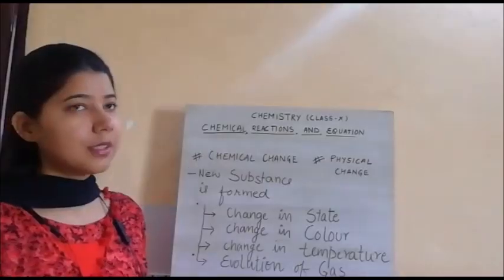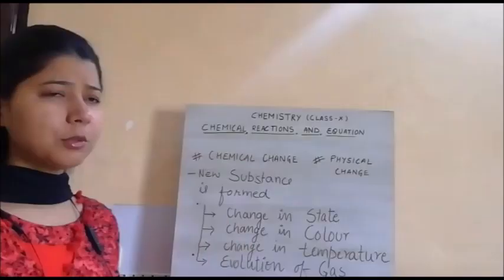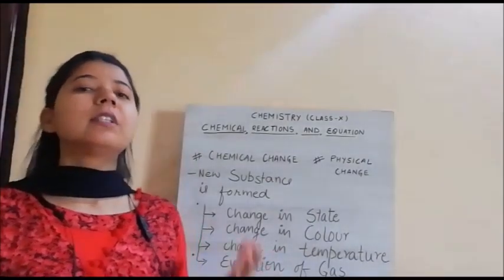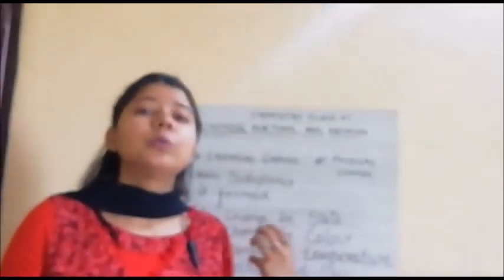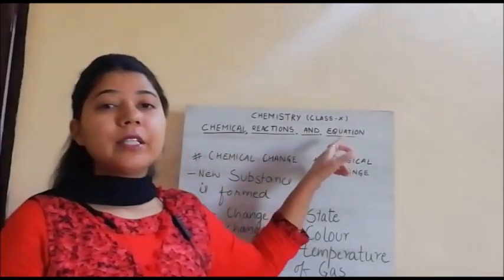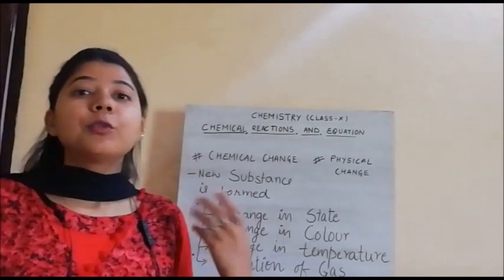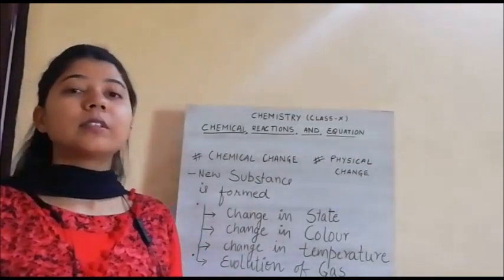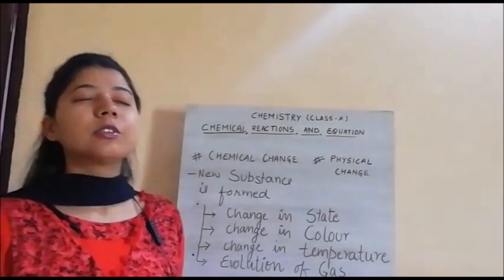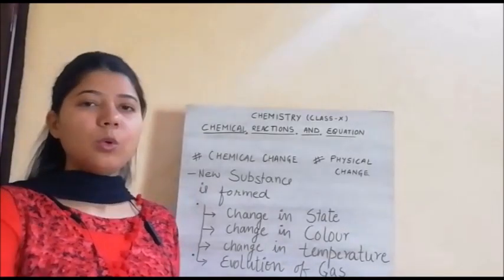Hello everyone. Today we are going to start the very first chapter: Chemical Reactions and Equations. In this chapter, first of all, let's check the objectives - what we are going to learn. You are going to know everything about chemical reactions: how to write a chemical reaction, what are the factors because of which chemical reactions occur, how to write them in the form of an equation, how to balance it, and why balancing is needed. Then we'll cover the various types of chemical reactions and their use in daily life.